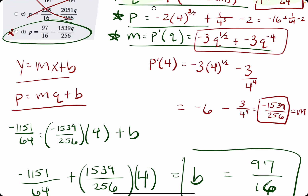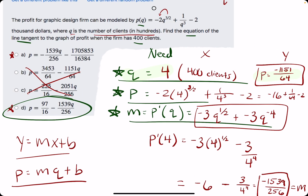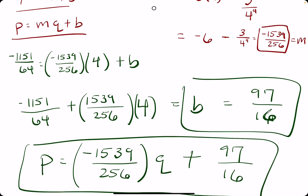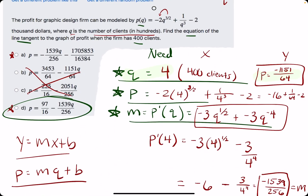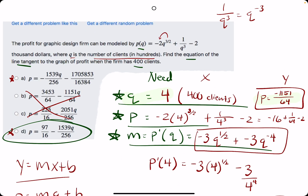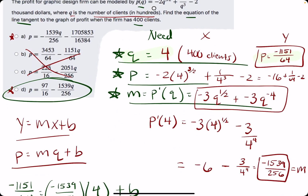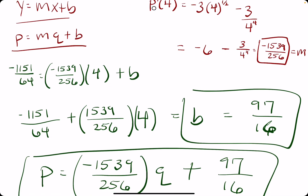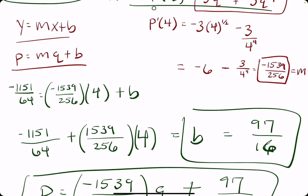So the final equation is p equals m times q plus 97 over 16. That's it. Let me know if you have any questions. Thank you, Gabby, for sending me some questions to work out for you all.